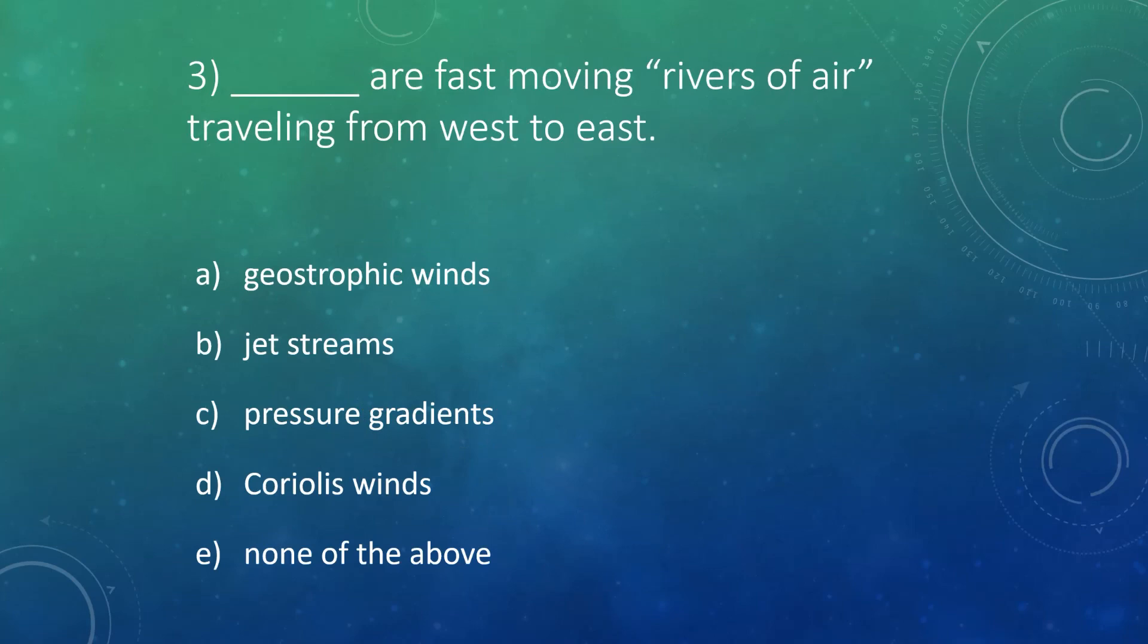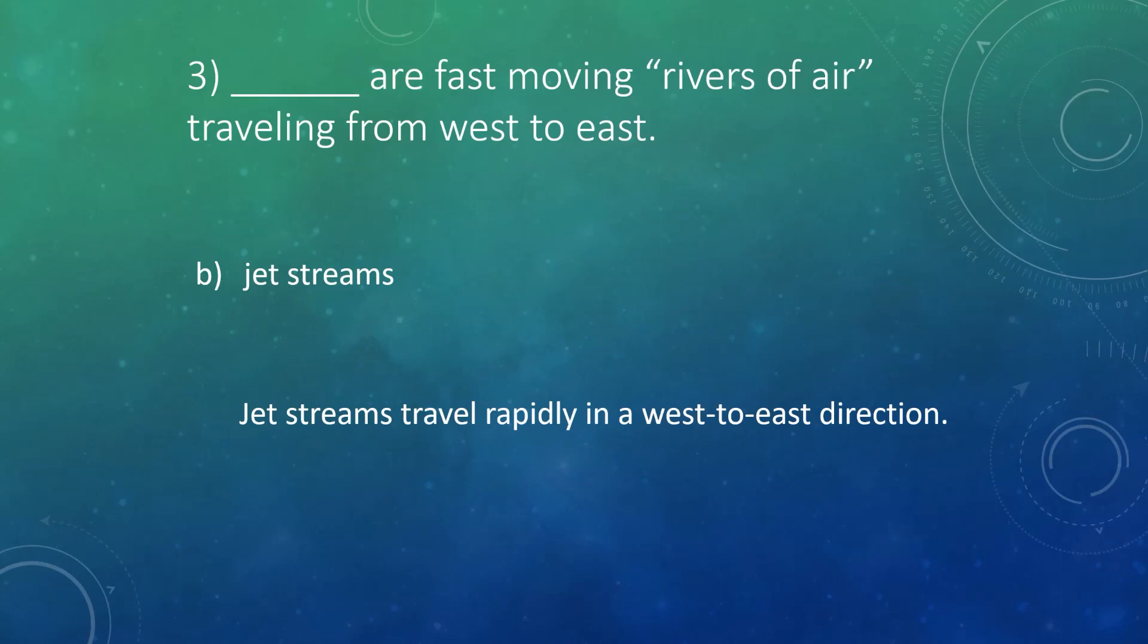Question three, what are fast-moving rivers of air traveling from west to east? Okay, so remember that our rivers of air up way above the surface are what is known as jet streams. These rapidly travel from west to east.